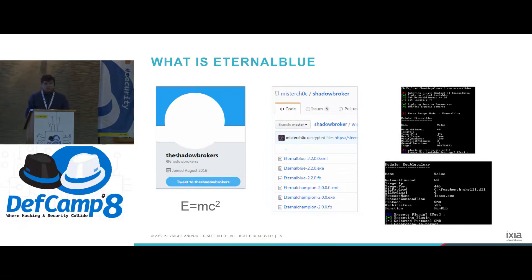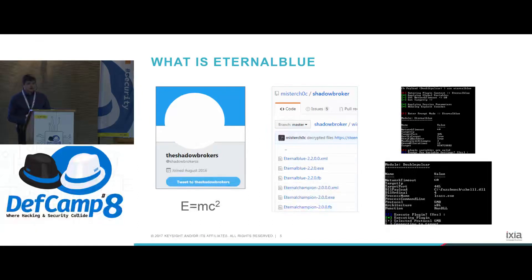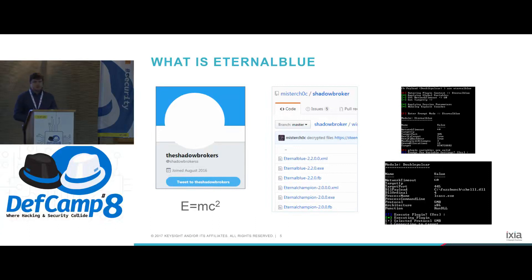The backdoor module we're most interested in is called Double Pulsar. It's a stealthy backdoor that gets deployed once exploitation completes successfully on the system. It communicates via a covert channel using the SMB protocol. The traffic itself is XOR encrypted and somewhat staggered inside certain fields like timestamp fields, which might bypass an IDS detection device.